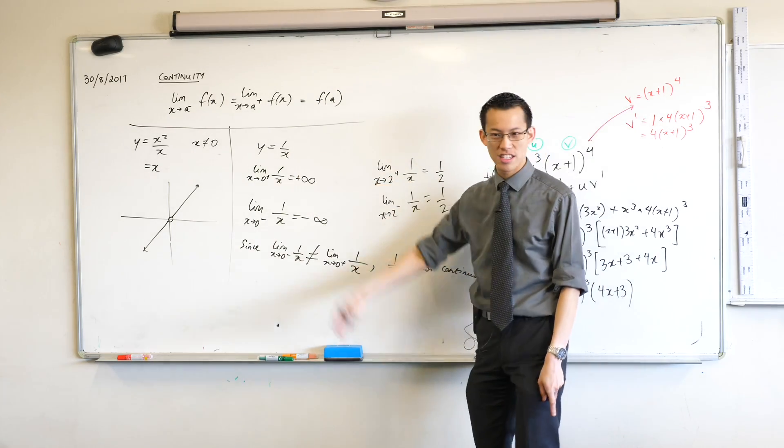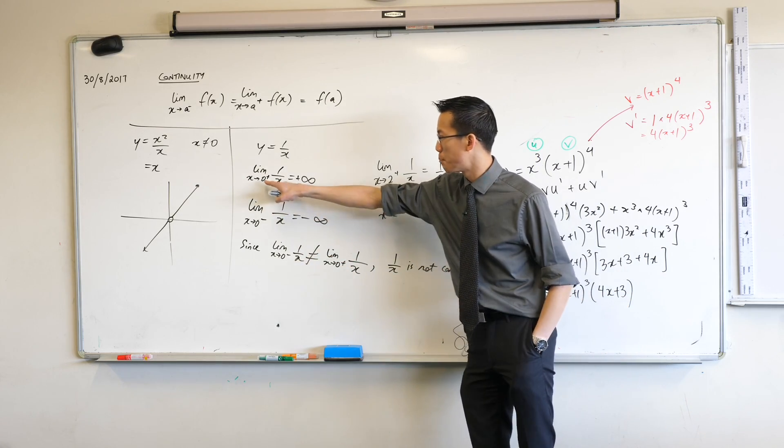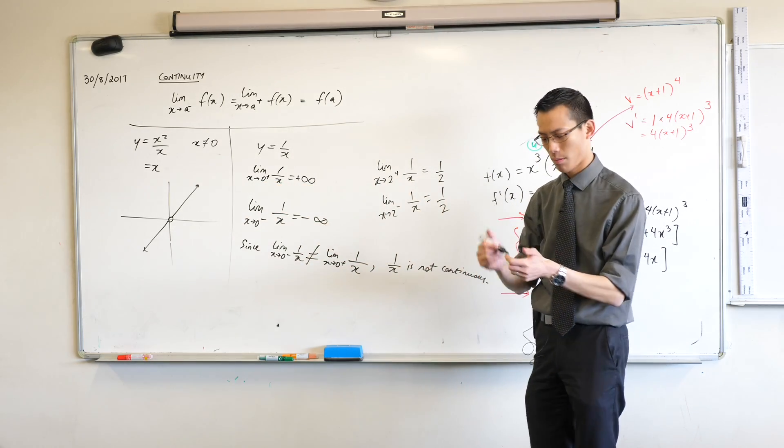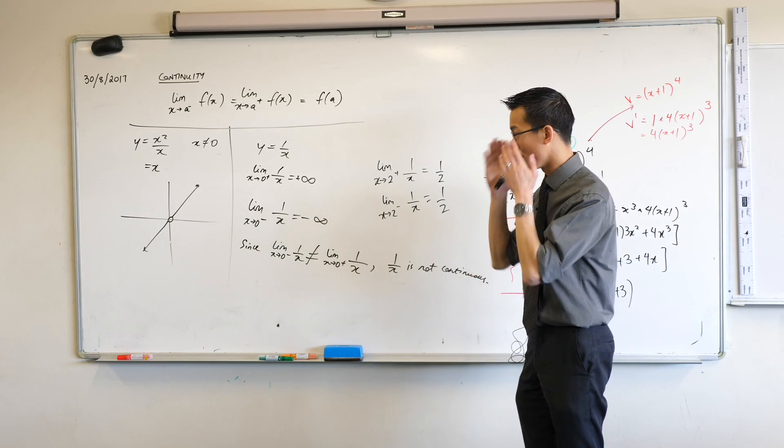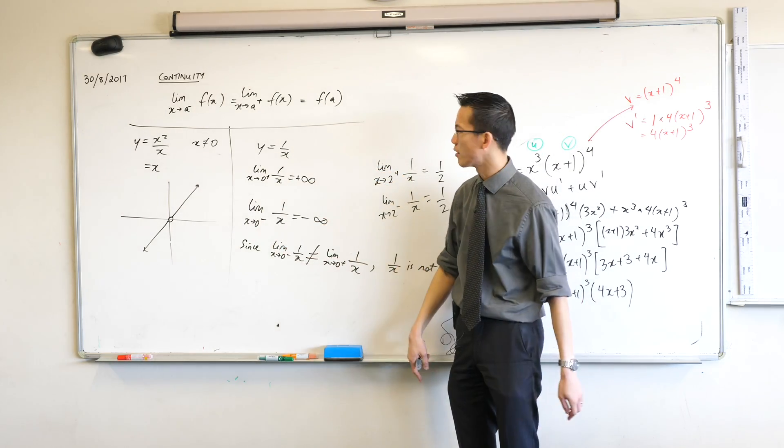1 over x is not discontinuous everywhere, it's only discontinuous at particular places, right? So if you're supposed to prove that something is discontinuous, you have to know where to look and they'll give you an easy function where it's fairly straightforward, okay?